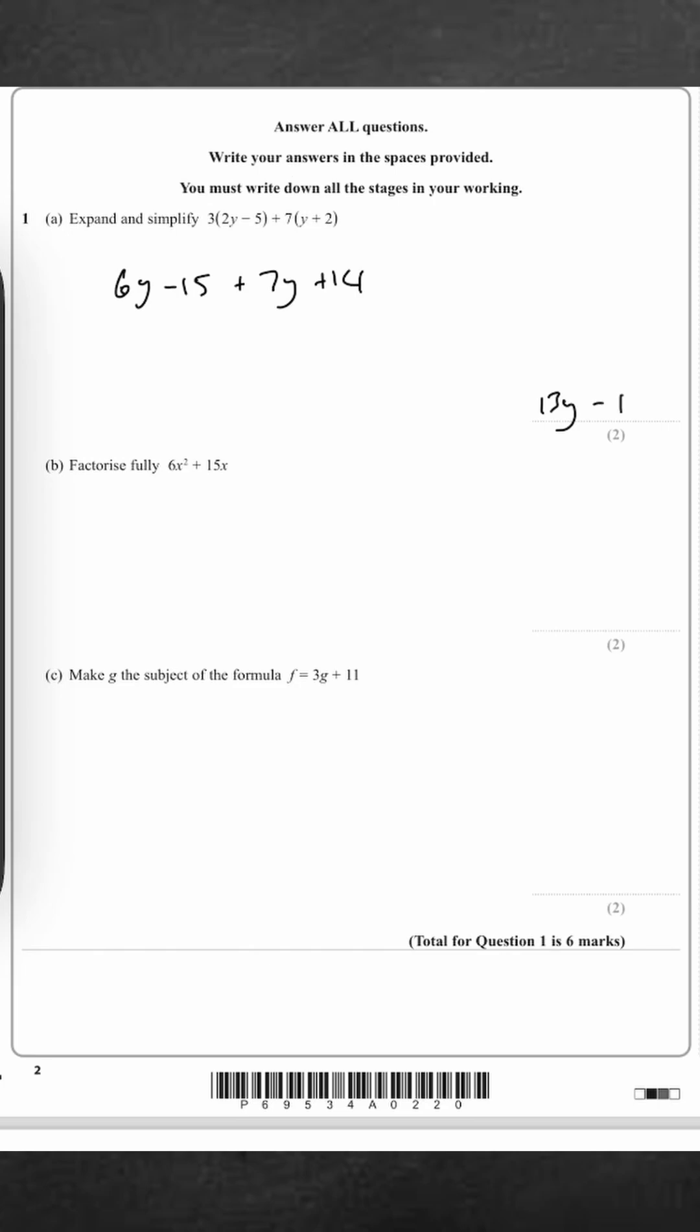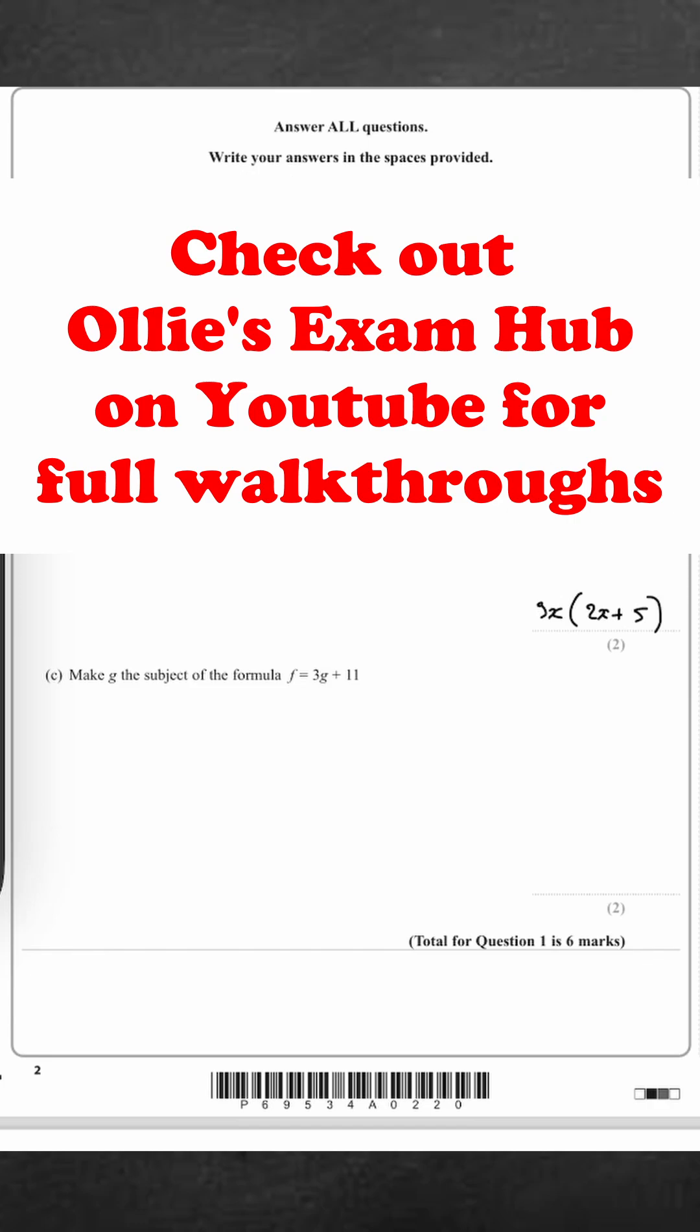Part b. Factorize fully 6x² + 15x. So the factors that are in both of these, we have an x and we also have a 3, which goes into 6 and 15. So we're going to take 3x outside the brackets and that leaves 2x + 5 inside the brackets, and that is fully factorized as 3, 2, and 5 are prime.